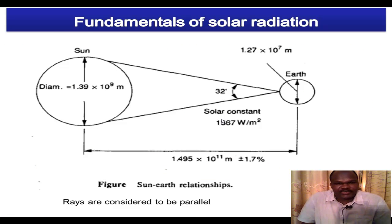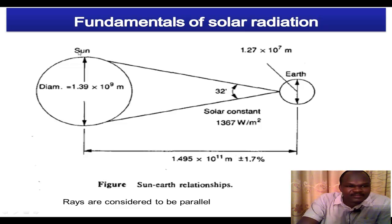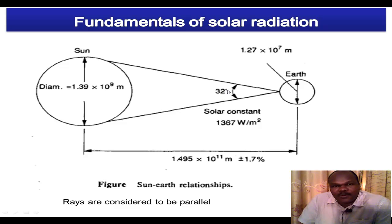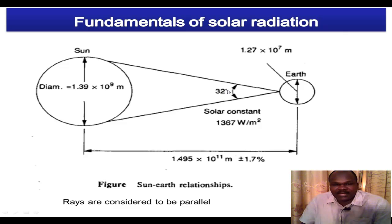Still talking about the solar and the earth geometry. If you look at this picture, you have the sun on the left and the earth on the right. Taking two extreme cases where you have one ray coming from one end of the sun and the other ray coming from the other end of the sun — both going to the earth — by the time they reach the earth, they would have made some angle of 32 minutes, half a degree. Because the angle between them is so small, we assume that all the rays coming from the sun to the earth are all parallel.